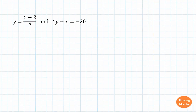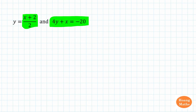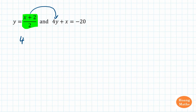Let's move on to the next one. We know that y is equal to (x plus 2) over 2, and we have 4y plus x is equal to negative 20. So we just substitute (x plus 2) over 2 into y. So now 4y becomes 4 with bracket (x plus 2) over 2, bracket, plus x, is equal to negative 20.